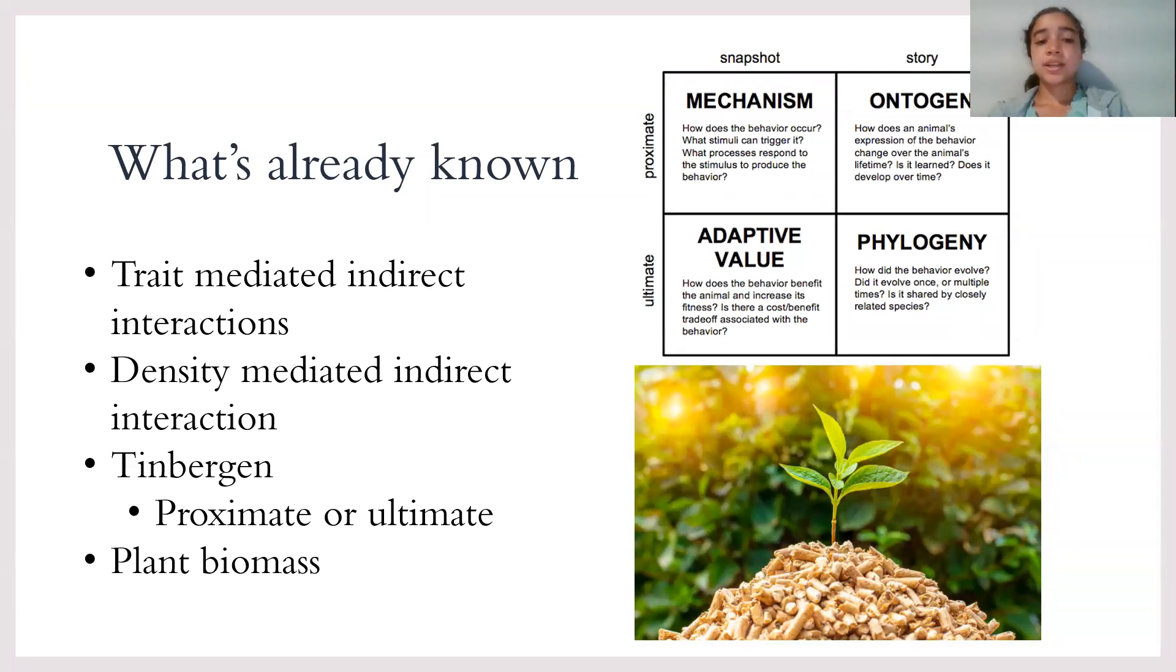What's already known continued. There are trait mediated indirect interactions, which is when a predator will indirectly change the behavior of its prey. Usually this entails when the prey will switch its own prey or go into starvation. It can even lead to prey emigrating away from its predator. Then there are density mediated indirect interactions, when a predator will indirectly affect its producer when directly interacting with its prey.